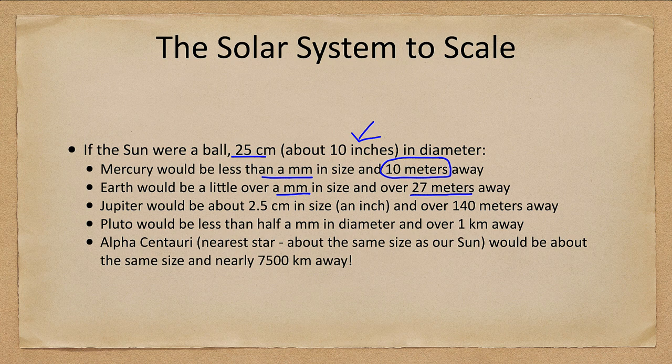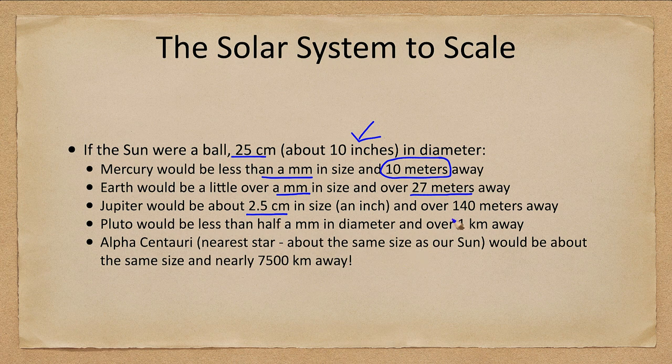And between it, only two small little things about a millimeter in size or less. Jupiter would be nearly an inch in size, tremendous compared to the others, but would be 140 meters away, well over a football field's worth away.